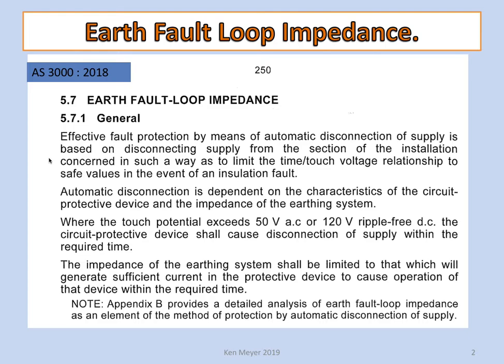The characteristics — if you remember, the protective devices for circuit breakers, it's normally curve B, C or D. And where the touch potential exceeds 50 volts AC or 120 volts ripple-free DC, the protective circuit device shall cause disconnection of the supply within the required time. The impedance of the earthing system shall be limited so as to generate sufficient current in the protective device and cause operation of that device within the appropriate or required time.